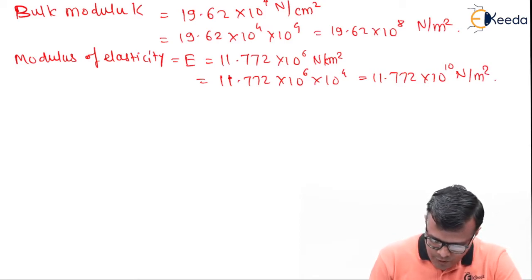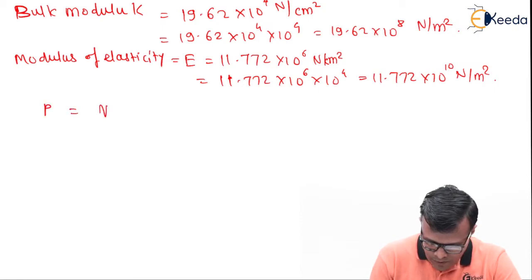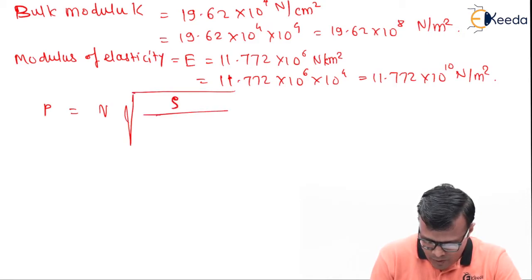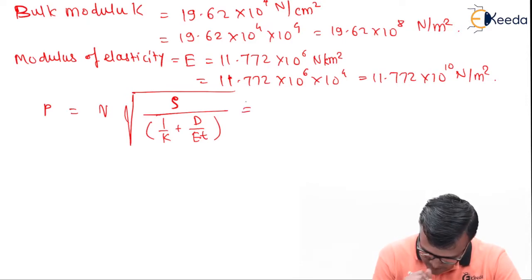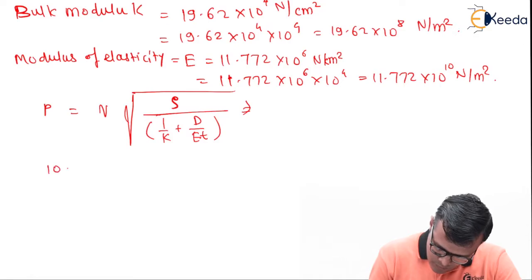So now we are going to use our formula for pressure calculation. P is equal to V into under root of ρ upon 1/K plus D upon ET. Putting the values. 1000 is equal to, not known to us.